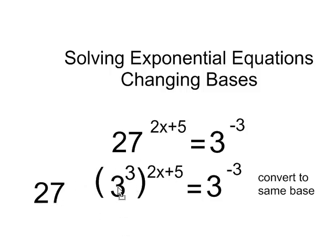Take 27 to 3 to the exponent 3, raised to the exponent 2x plus 5. Now I just have to use my exponent rules to simplify this expression a little bit, and then I can move forward with my equation.